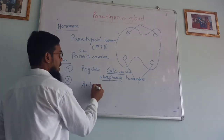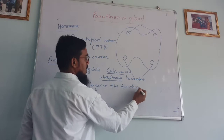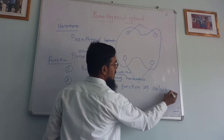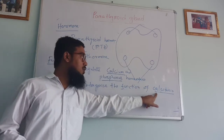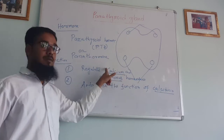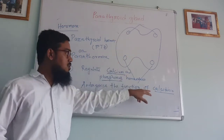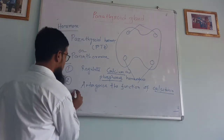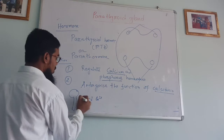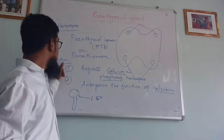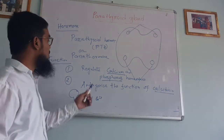The second function is they antagonize — meaning opposite action to — calcitonin. We already know that calcitonin is one type of thyroid hormone that maintains the calcium level. Calcitonin decreases the calcium level in our blood and more calcium is stored in our bone. But this parathyroid hormone has the opposite, antagonistic action to calcitonin.